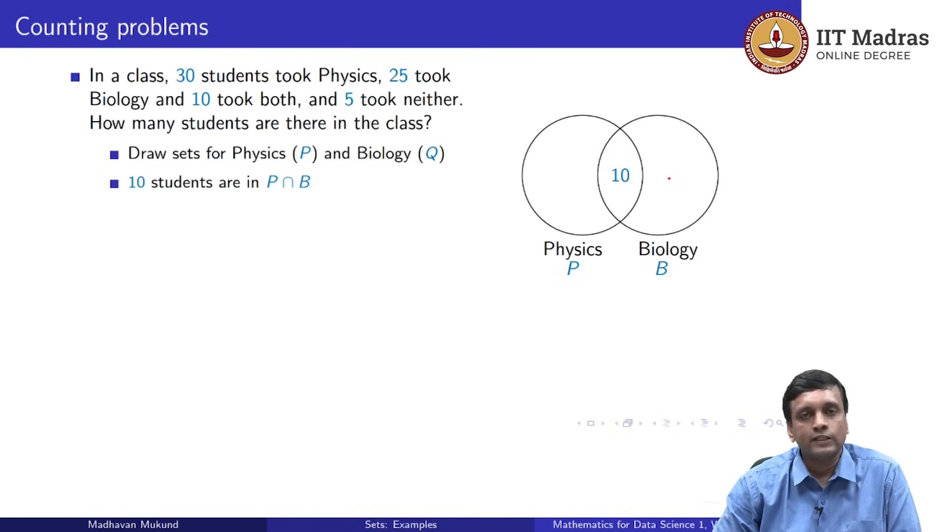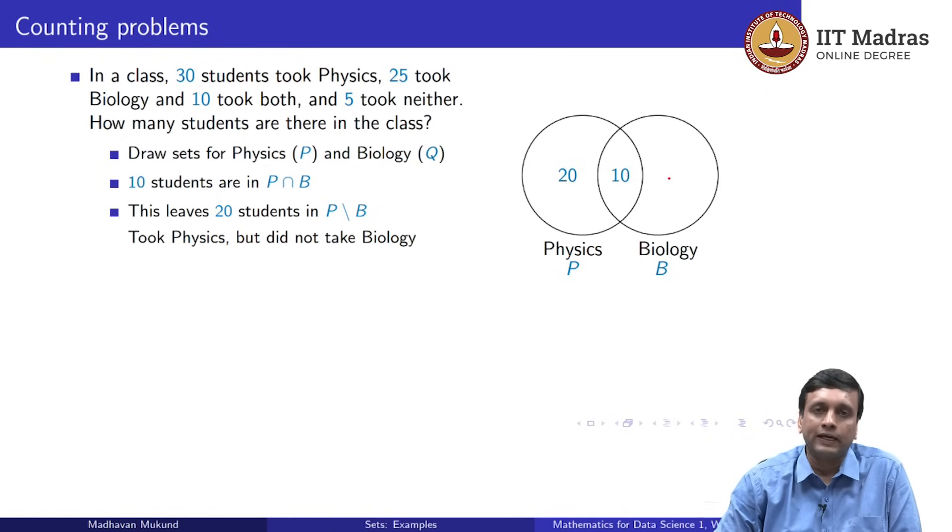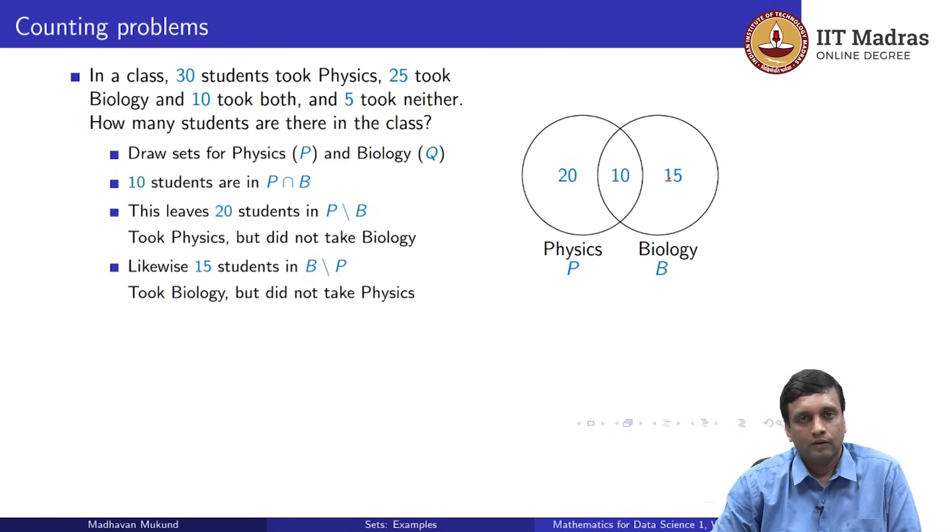We know that 30 students took physics overall, and we have already accounted for 10 of them because they have all taken both physics and biology. So, there are 20 students who have taken physics, but have not taken biology. This in our set notation is the set difference. It is the set difference between P and B. How many elements are in P which are not in B? And we have a symmetric thing on the right-hand side. We know that there are 10 students who have taken both, but 25 students take biology. So, there must be 15 students who are in B set minus P. These are students who took biology, did not take physics.